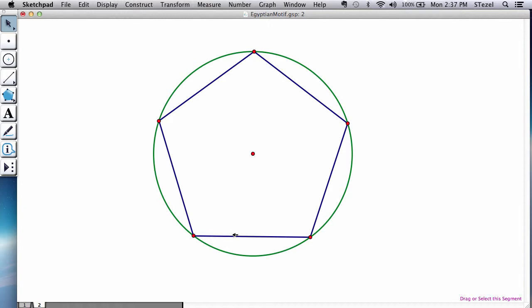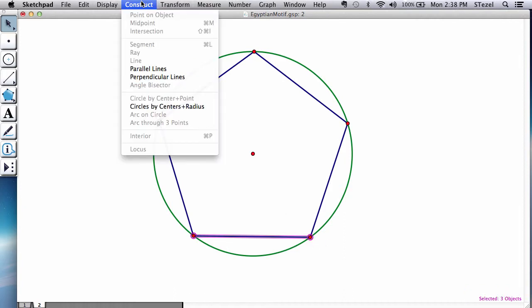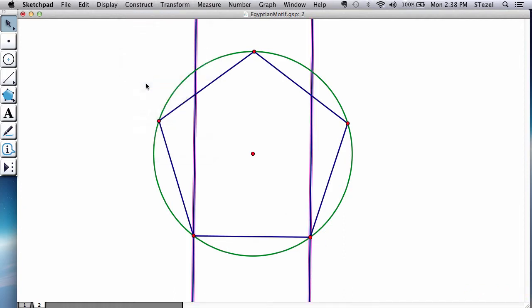So the way I do is I create a rectangle here. I select the bottom segment, the two endpoints. I construct perpendicular lines.